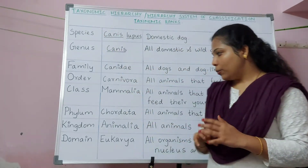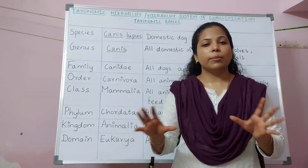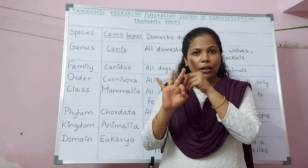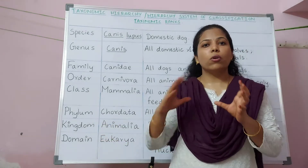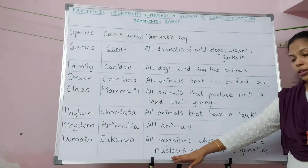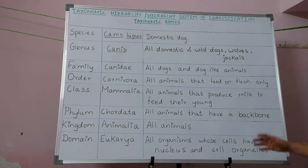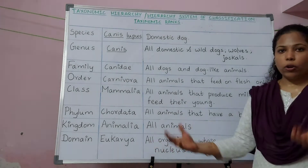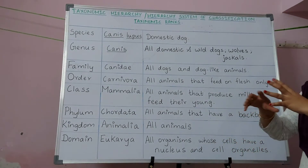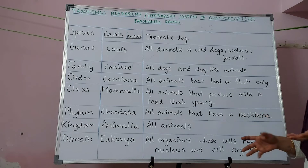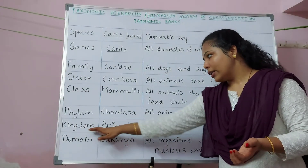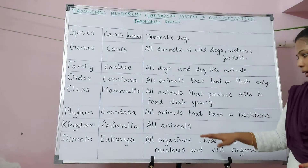All living organisms can be broadly classified into three domains: Archaea, Bacteria, and Eukarya. The Eukarya domain includes all living organisms that have a nucleus and cell organelles inside their cells — these are eukaryotic organisms. Since eukaryotic organisms are different from each other, they are further divided into kingdoms. The kingdom Animalia includes only animals.